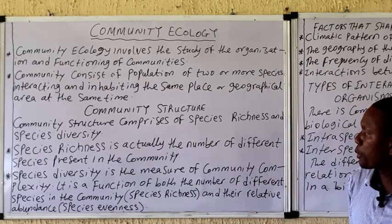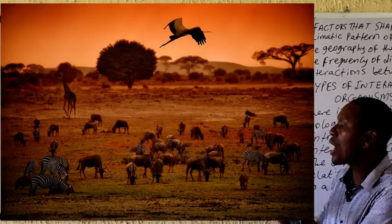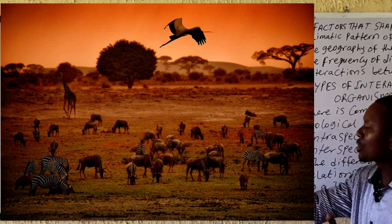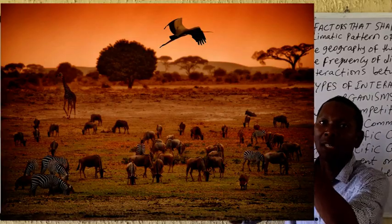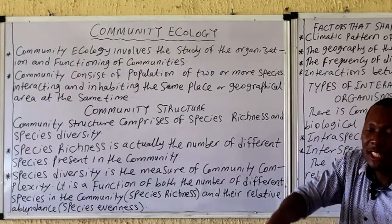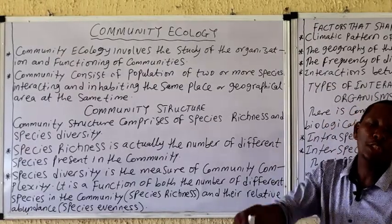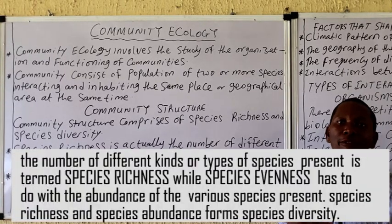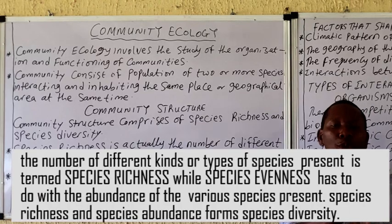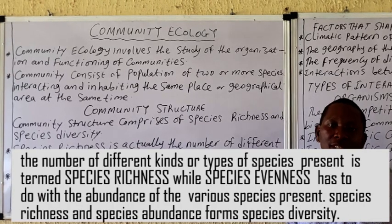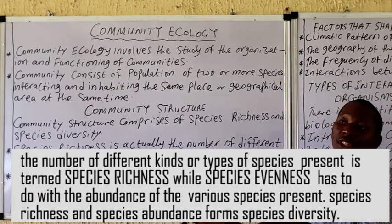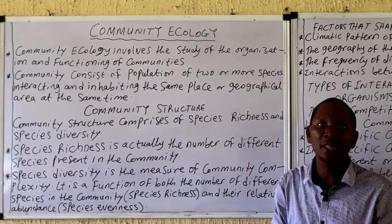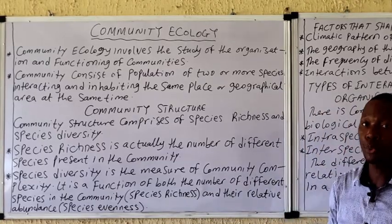From the diagram on the board, you can count the number of different species present — both plant and animal — and then also count the number of individuals of each species. For example, if we have zebras, lions, and other organisms in an ecosystem, counting the various numbers of individuals of each species is talking about species abundance, while counting just the number of different types of species present is talking about species richness.